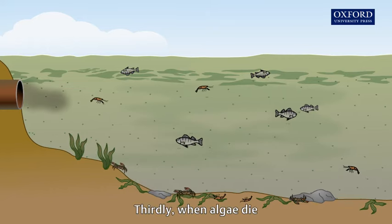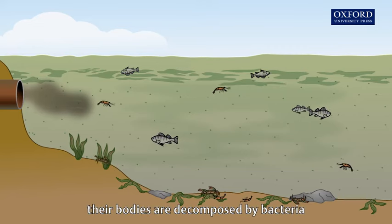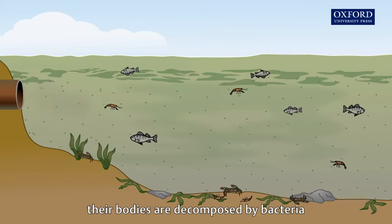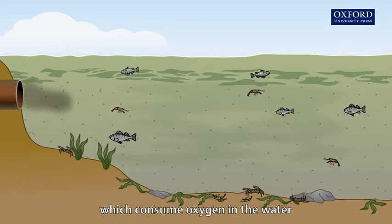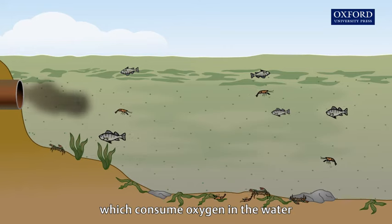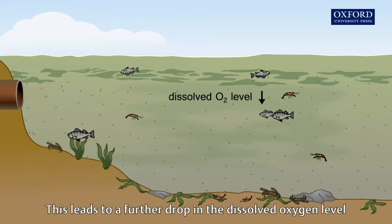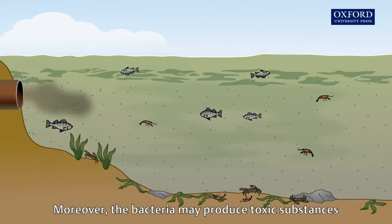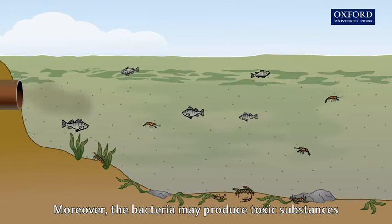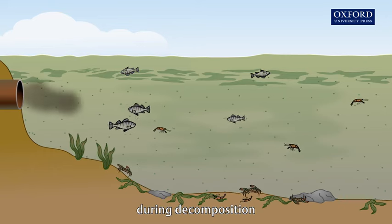Thirdly, when algae die, their bodies are decomposed by bacteria, which consume oxygen in the water. This leads to a further drop in the dissolved oxygen level. Moreover, the bacteria may produce toxic substances during decomposition.